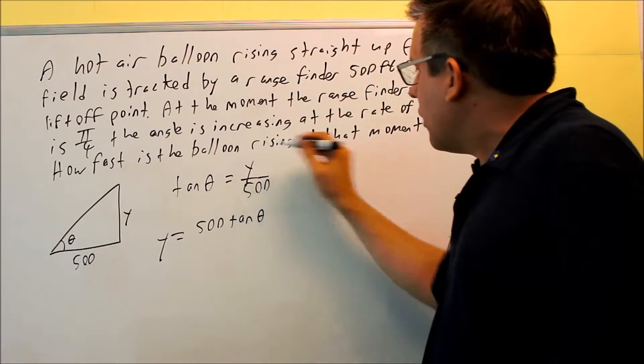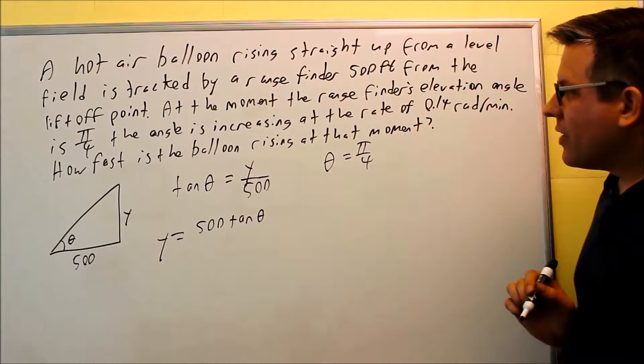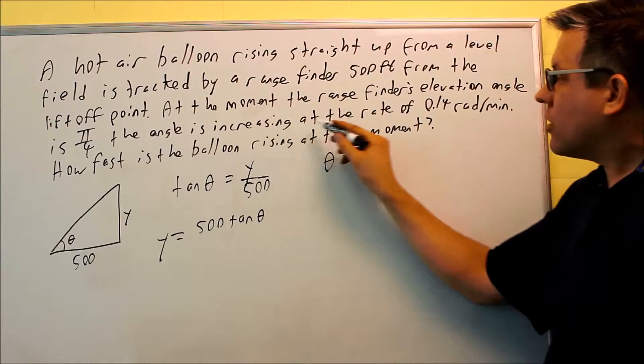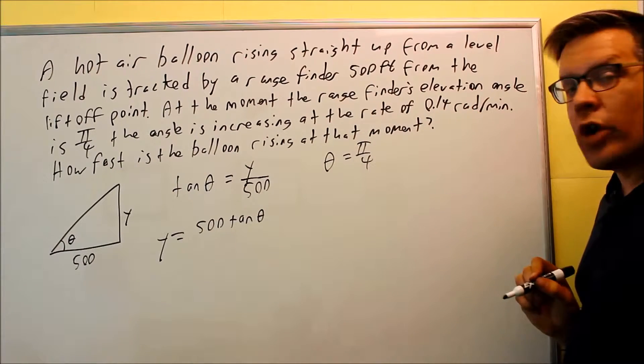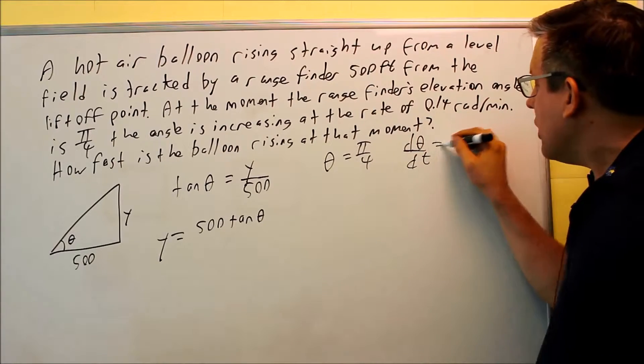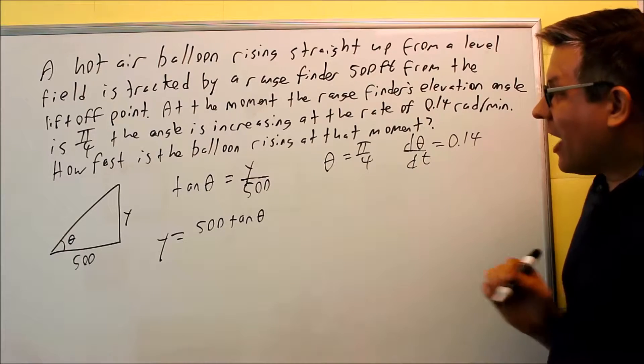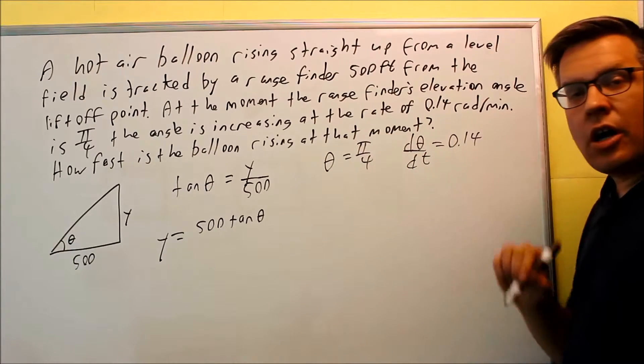In this case, we're given that our theta is pi over 4. Now let's read on. The angle is increasing at a rate of 0.14 radians per minute. That is going to be our d theta dt is 0.14 radians per minute. How fast is the balloon rising? That's going to be our dy dt.